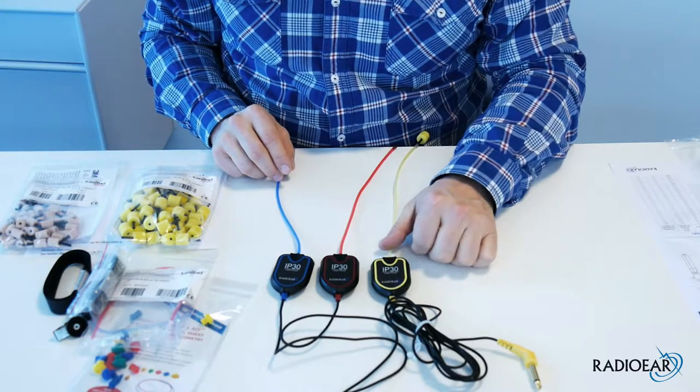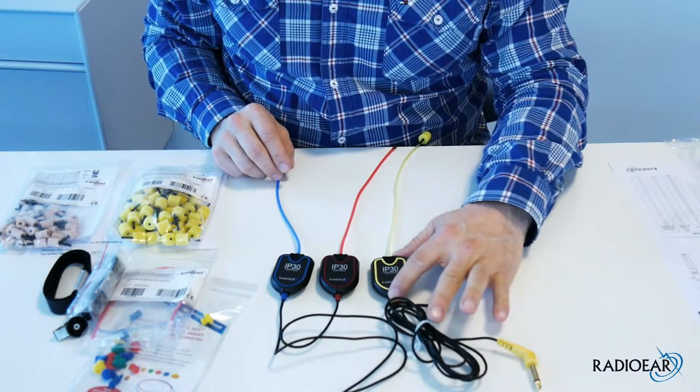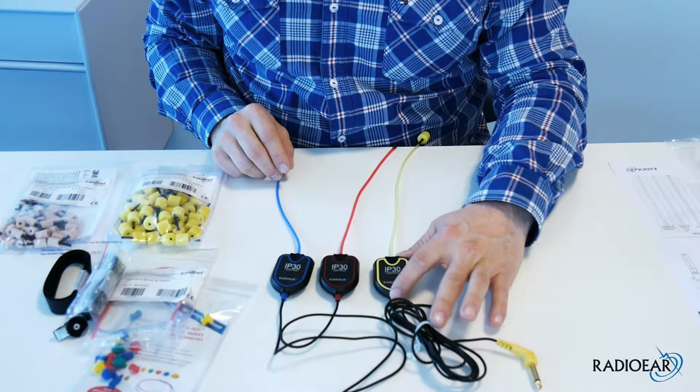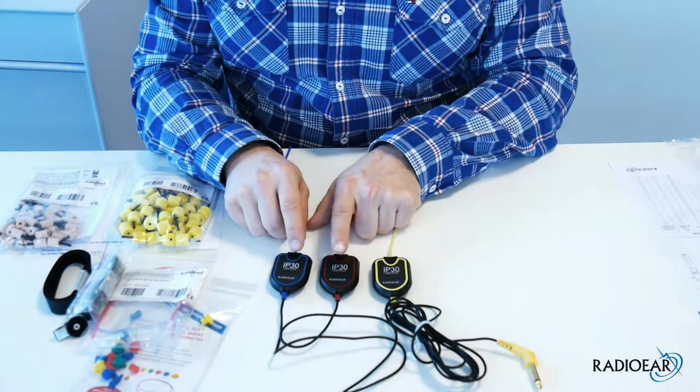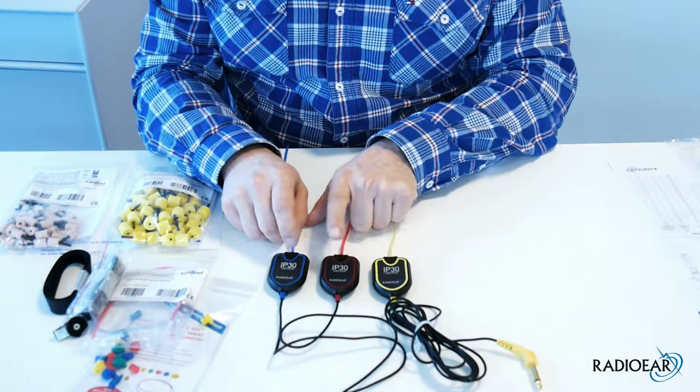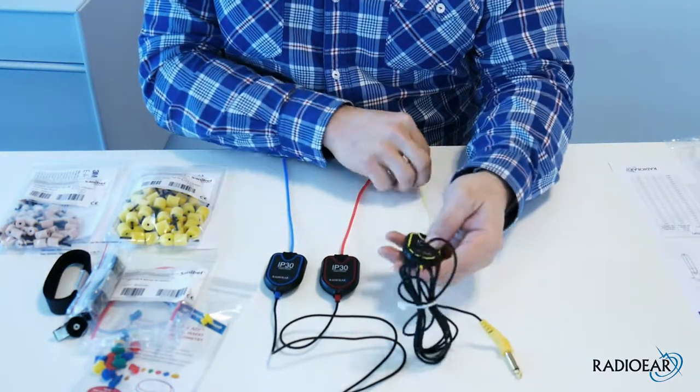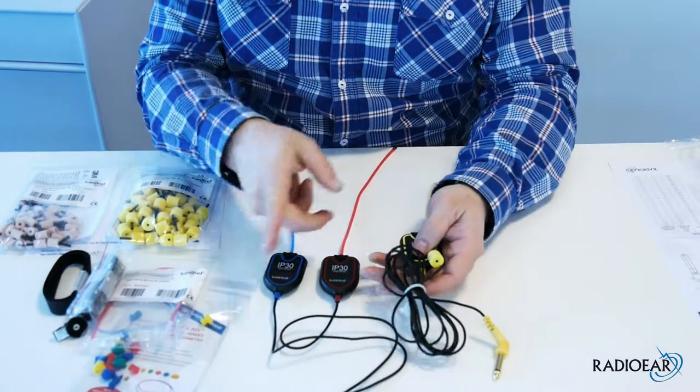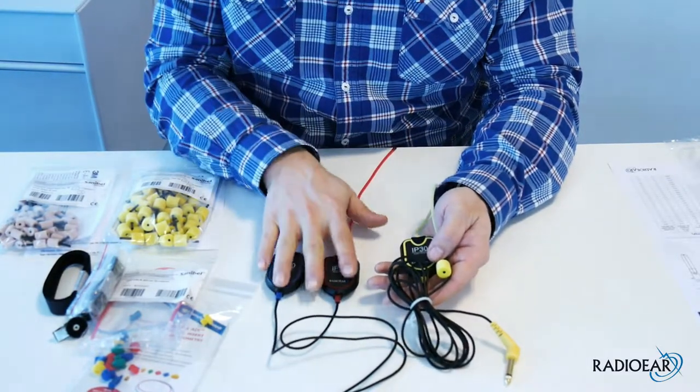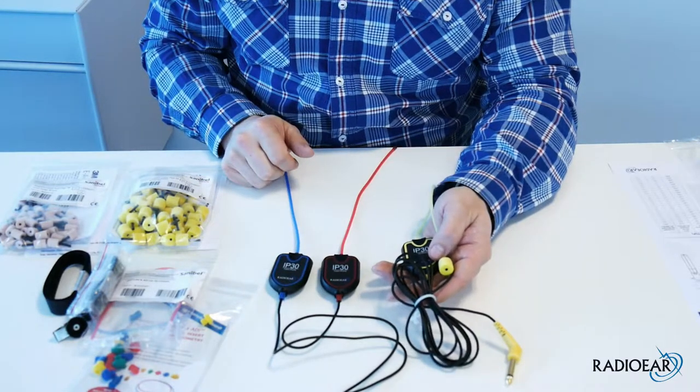This version has the yellow color that is used by many brands for contract testing, whereas here you have red for right and blue for left. Other than the color, there's no difference in the performance of the three, so I'll just focus on these two.